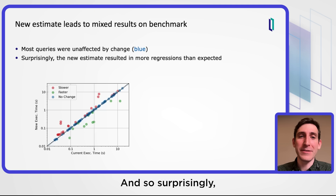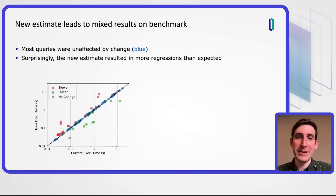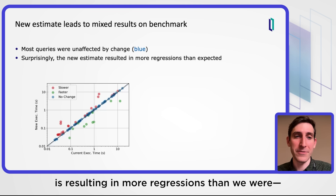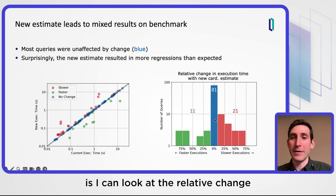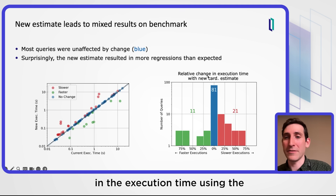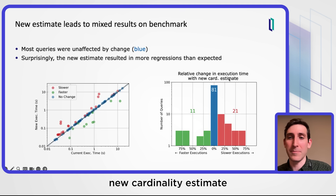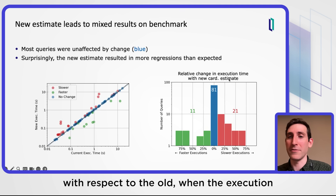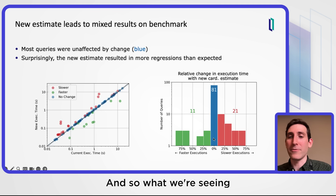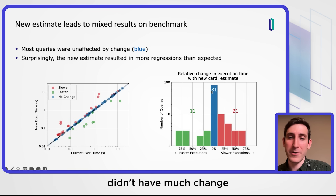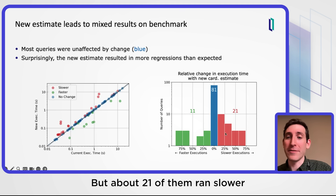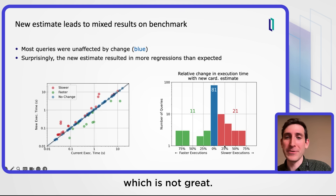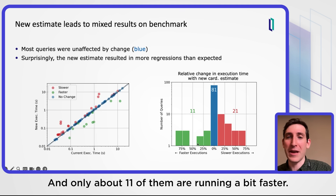Surprisingly, we found that this new estimate is resulting in more regressions than we expected. Looking at the relative change in execution time using the new cardinality estimate versus the old: about 81% of the queries in this benchmark didn't have much change in their execution time, but about 21% of them ran slower when using the new estimate, which is not great. And only about 11% of them were running a bit faster.